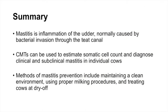In summary, we learned that mastitis is inflammation of the udder normally caused by bacterial invasion through the teat canal. Once that invasion occurs, the bacteria must establish an infection for mastitis and inflammation to develop. We can use the California Mastitis Test or CMT to estimate the somatic cell count and help diagnose clinical and subclinical mastitis at the individual cow level. Prevention includes keeping a clean environment, properly following milking parlor procedures, and treating all cows at dry-off.